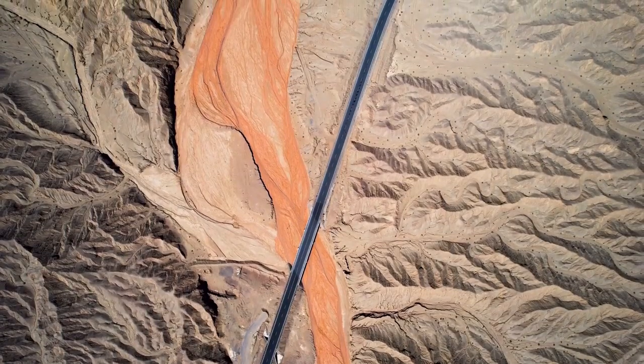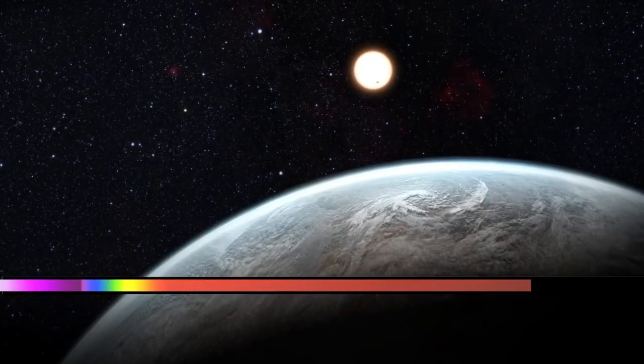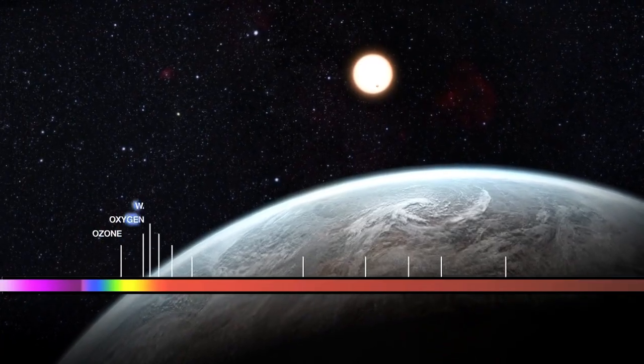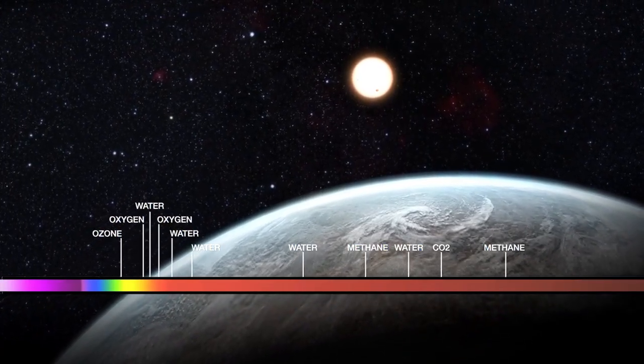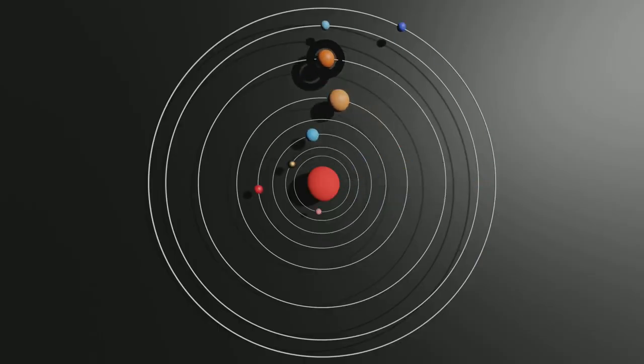Prior to this, astronomer Percival Lowell had hypothesized the existence of a mysterious planet X, which he believed influenced the orbits of Uranus and Neptune. Tombaugh's discovery confirmed Lowell's theory and was officially recognized by major scientific organizations.